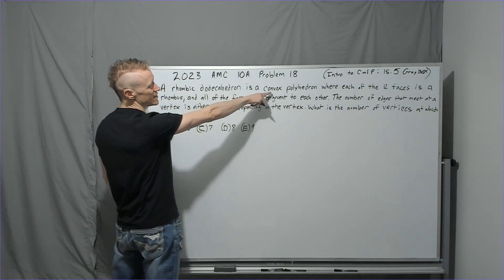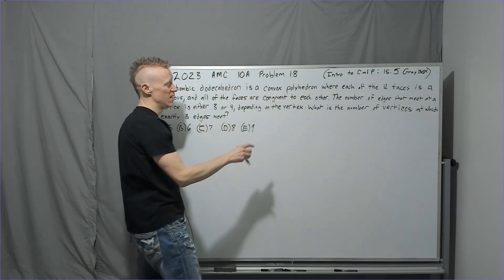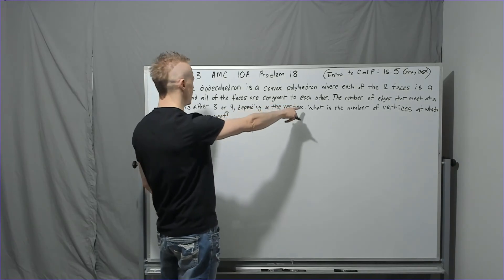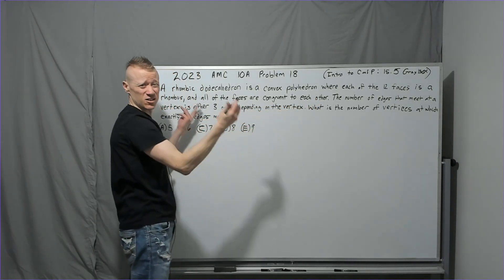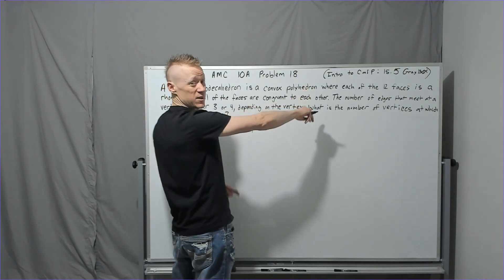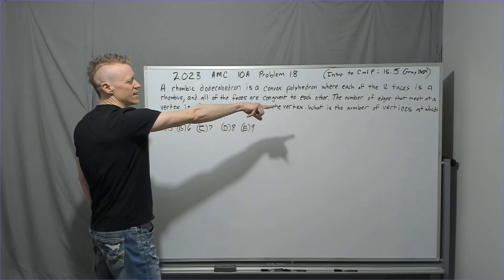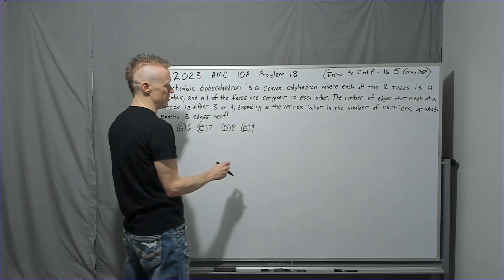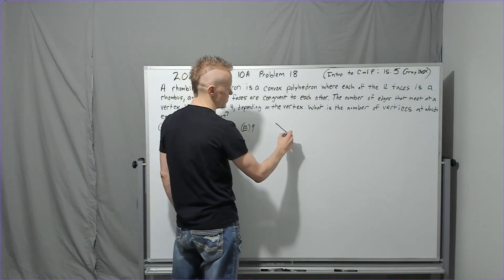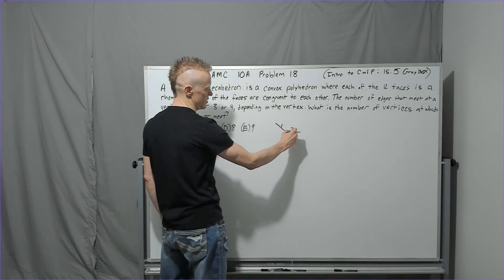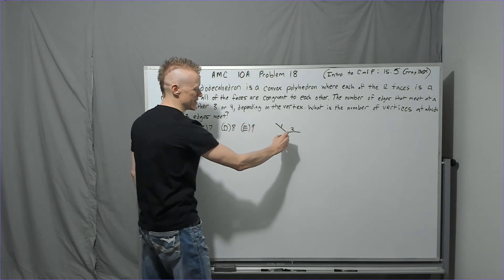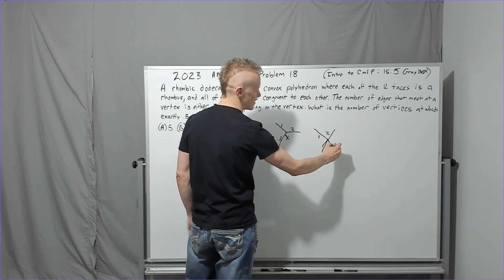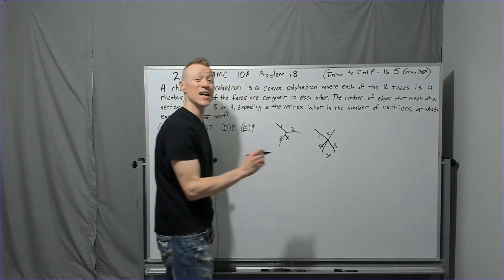A rhombic dodecahedron is a convex polyhedron where each of the 12 faces is a rhombus, and all of the faces are congruent to each other. I didn't actually use this fact, the congruence. I didn't really care. Maybe it plays a role and I just didn't perceive what role it would play. The number of edges that meet at a vertex is either 3 or 4, depending on the vertex. So edges meeting at one vertex, you know, something, this is 1, 2, 3 edges. So you're going to have, let's call that type X and the type where 4 would meet, you know, something like this, whatever. I don't know how it sets up, whatever. It'll be 4 like that. We'll call that type Y.